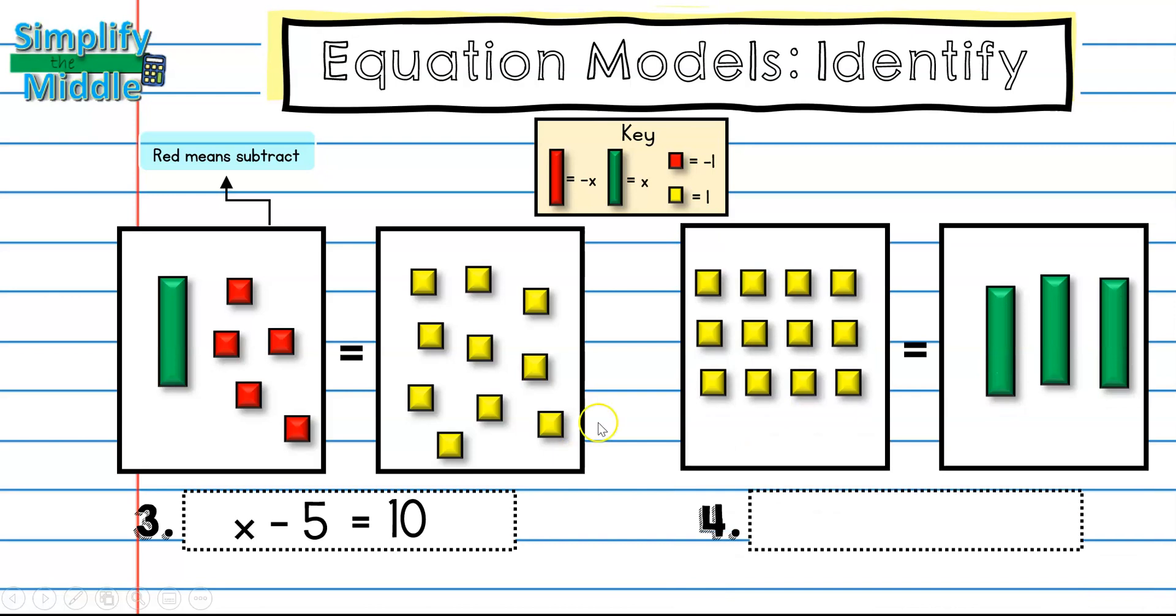For our last example for identifying, I see that here I've got rows and columns of these single tiles, which represent a constant of 1. So I have 12 here. And I have my equal sign. And then I have 3 of these green bars, which represent x. So I have 3x.